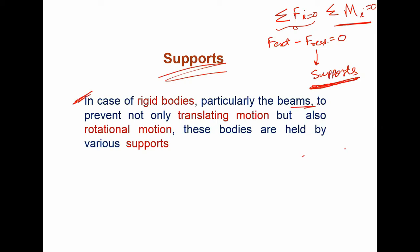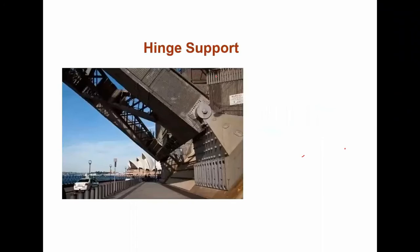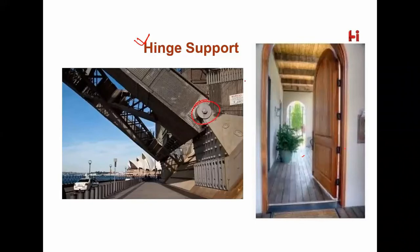In the case of rigid bodies, particularly beams, to prevent not only translating motion but also rotational motion, these bodies are held by various supports. These supports provide resisting forces as well as resisting moments — they prevent translation by producing resisting forces and also resist rotation. One of the main types of support used in structures or mechanisms is known as the hinge support. You can find hinge support in bridges and in doors of your home.